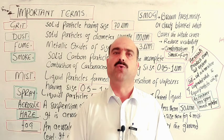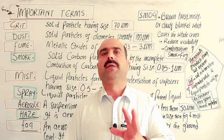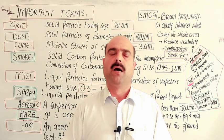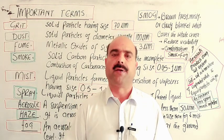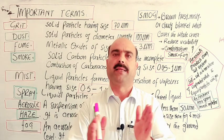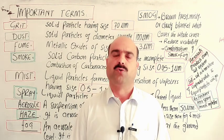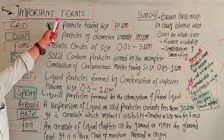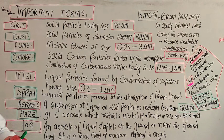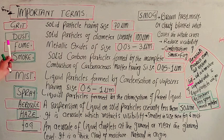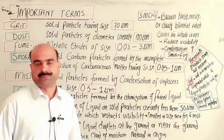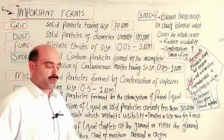Students, these basic terms are used in environmental chemistry frequently, and students sometimes face difficulty in understanding them. So I will explain these important terms. Some important terms used in environmental chemistry include: grit, dust, fume, smog, mist, spray, aerosol, haze, fog, and smog. Let's discuss these terminologies one by one.